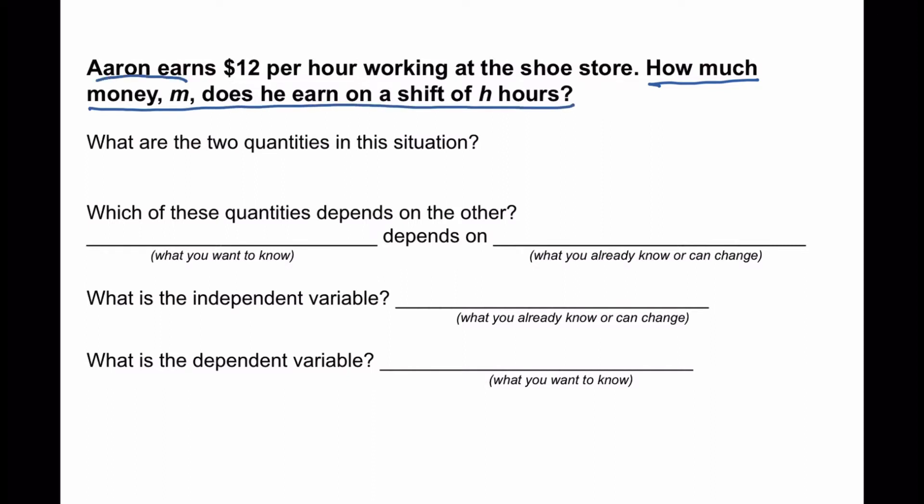One variable is for money, which is the variable M, and the other represents the number of hours that Aaron works. So we're going to write here money, and that's M, and we have hours, and that's H.